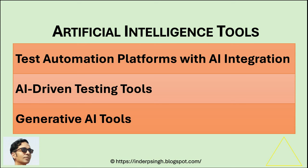Generative AI for QA tools can automatically generate test cases, scripts, and test data based on input parameters, reducing the need for manual test design. Selecting the right tool depends on your specific needs for automated QA testing — you may use an AI-based automation tool or create your own AI test automation.